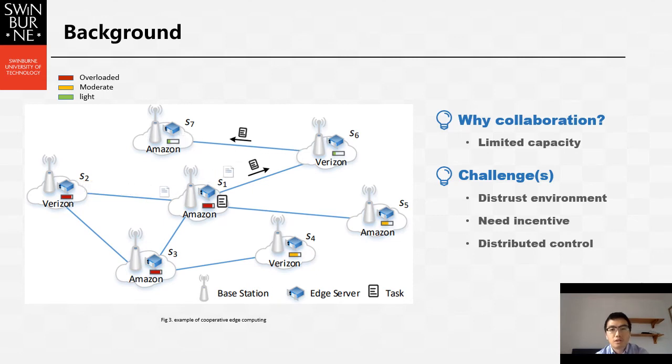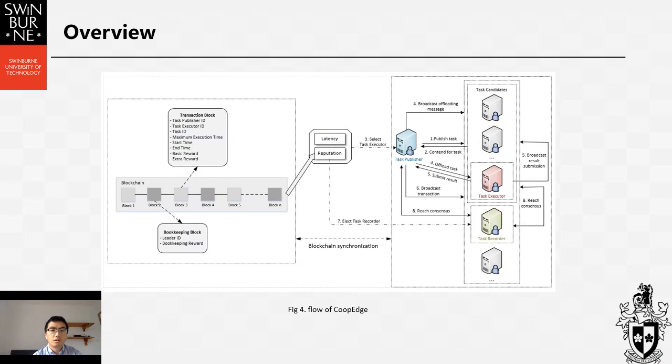Another challenge is efficient control. For example, it's impractical to coordinate the cooperation among edge servers in a centralized manner from remote cloud because it has long latency. So, according to the challenges mentioned before, we design CoopEdge that's based on blockchain technology to support cooperative edge computing.